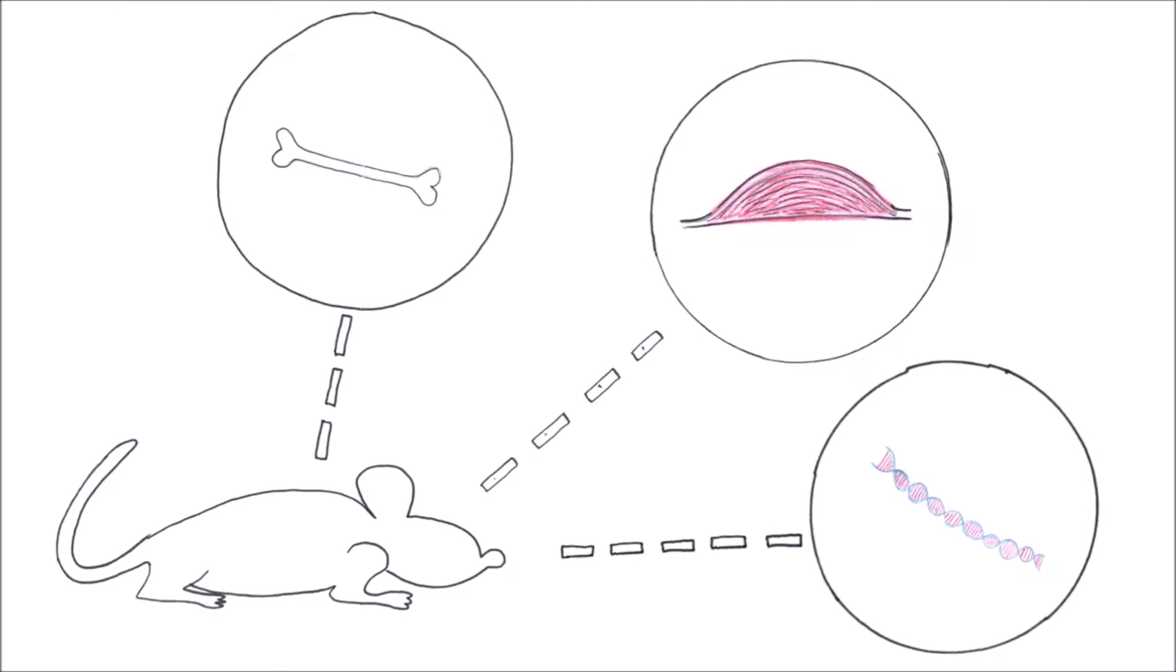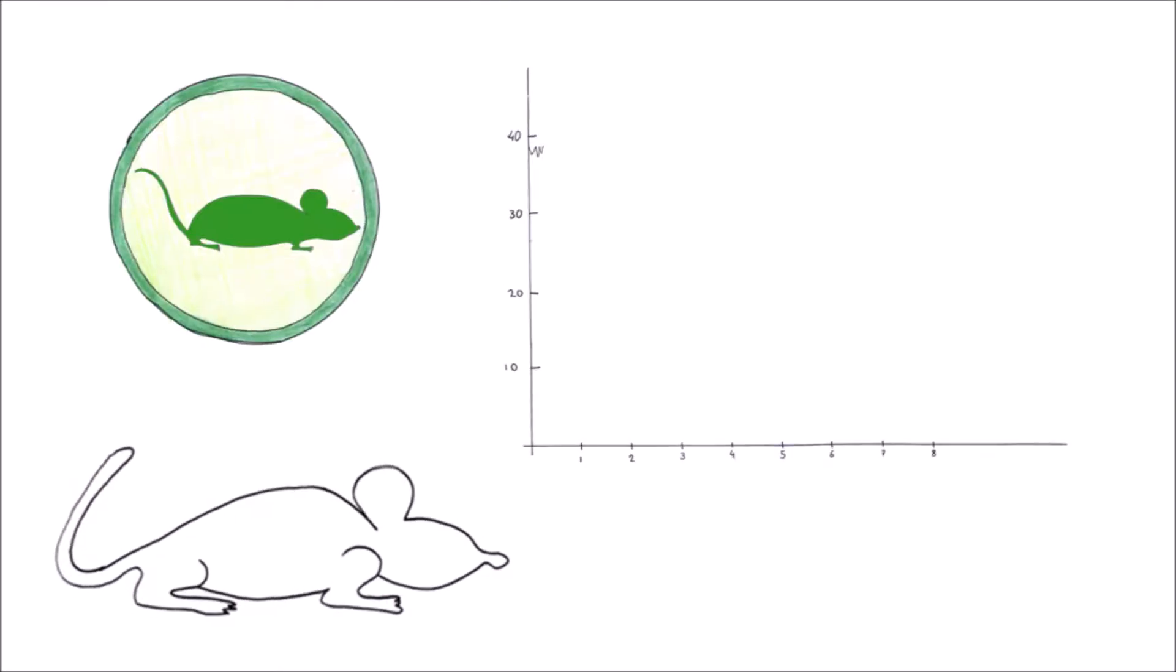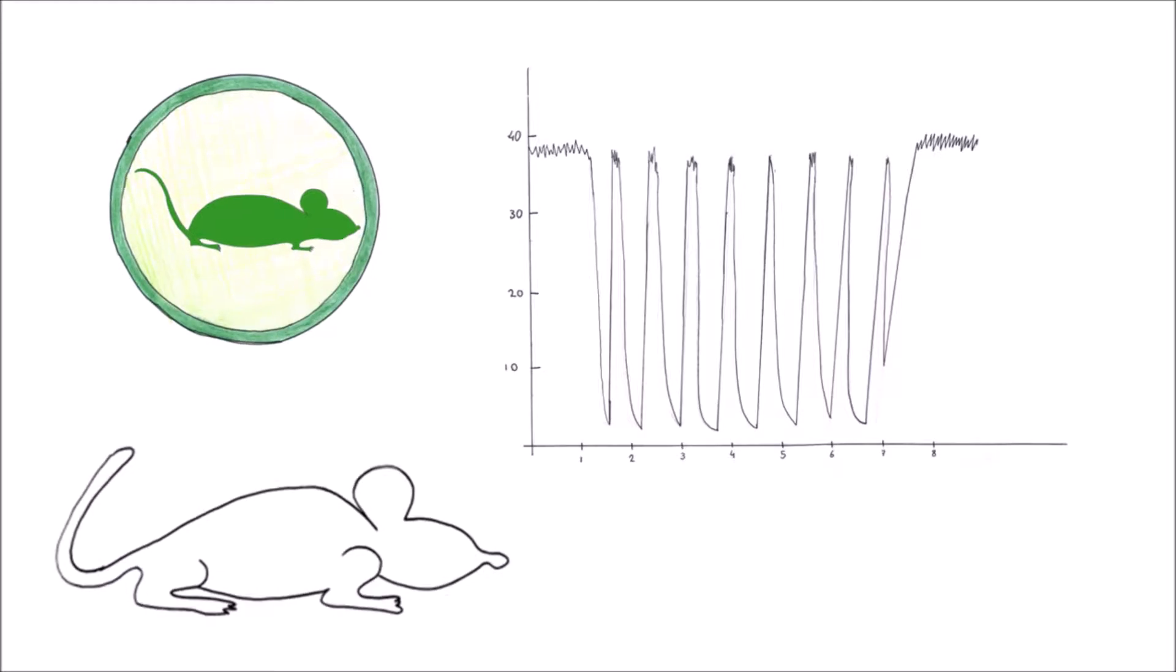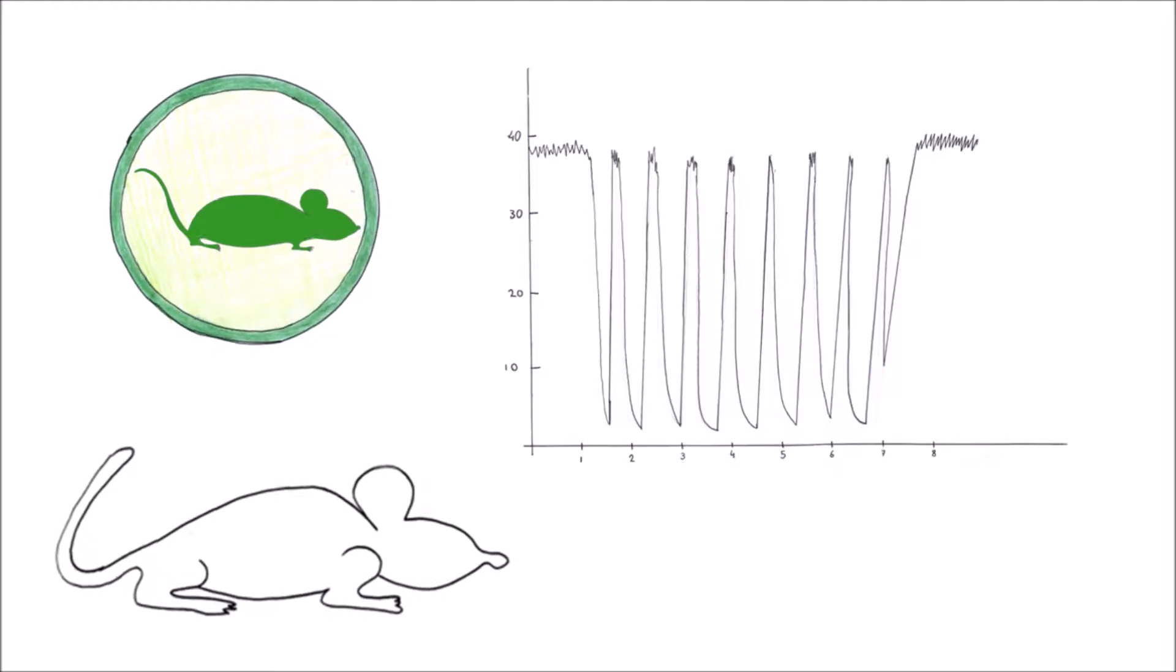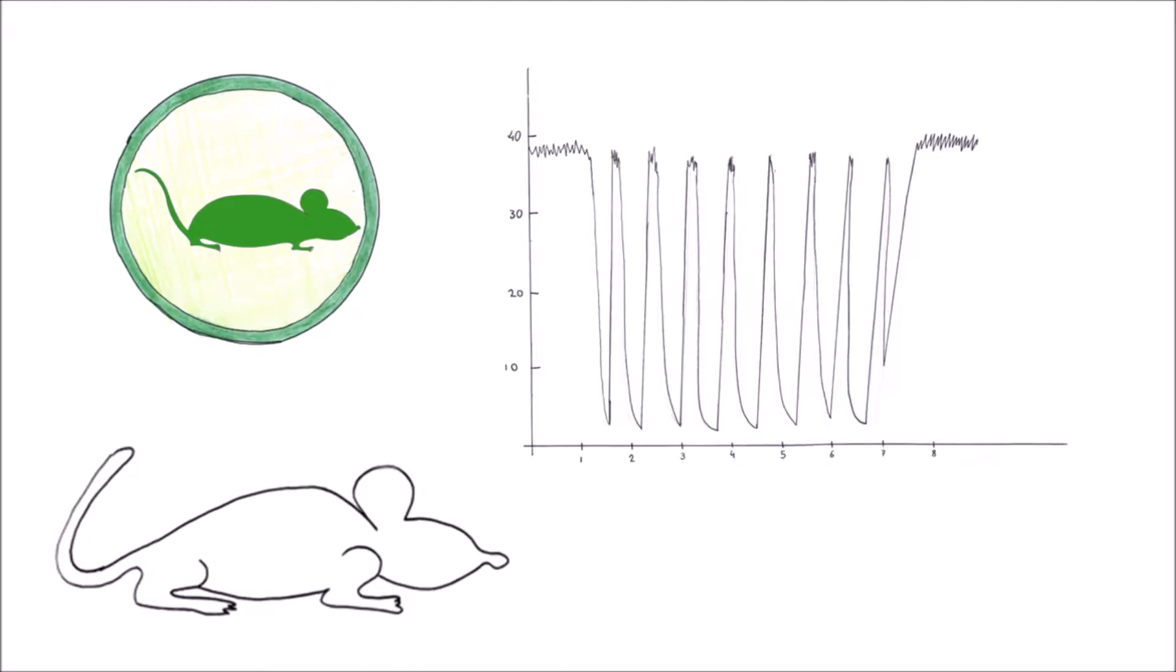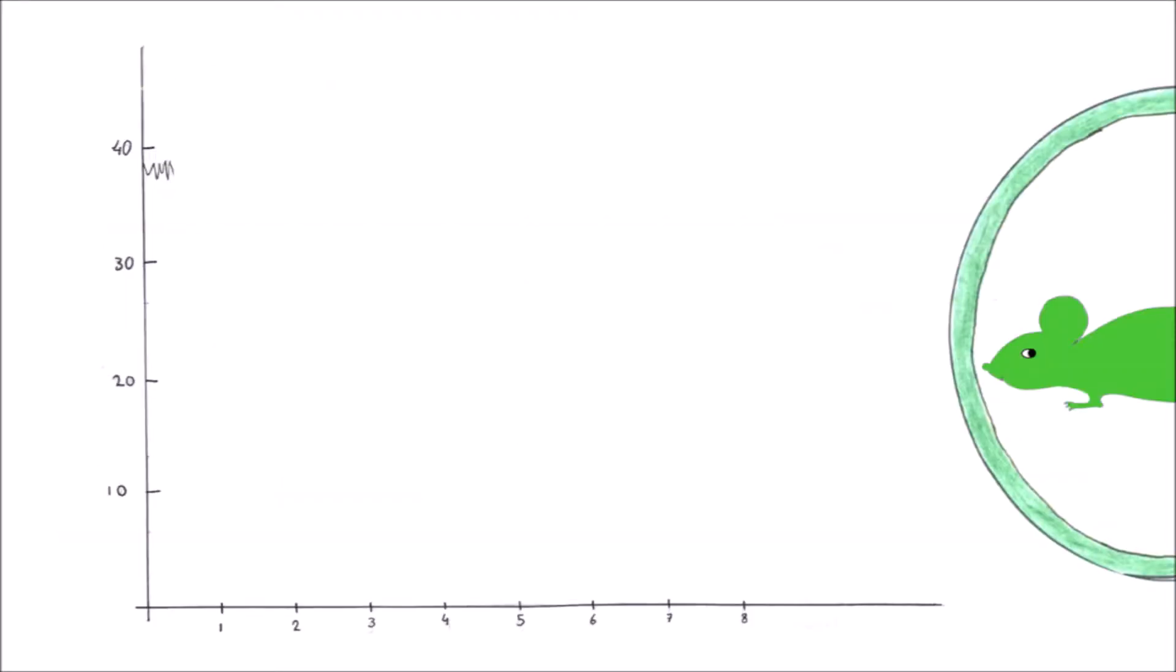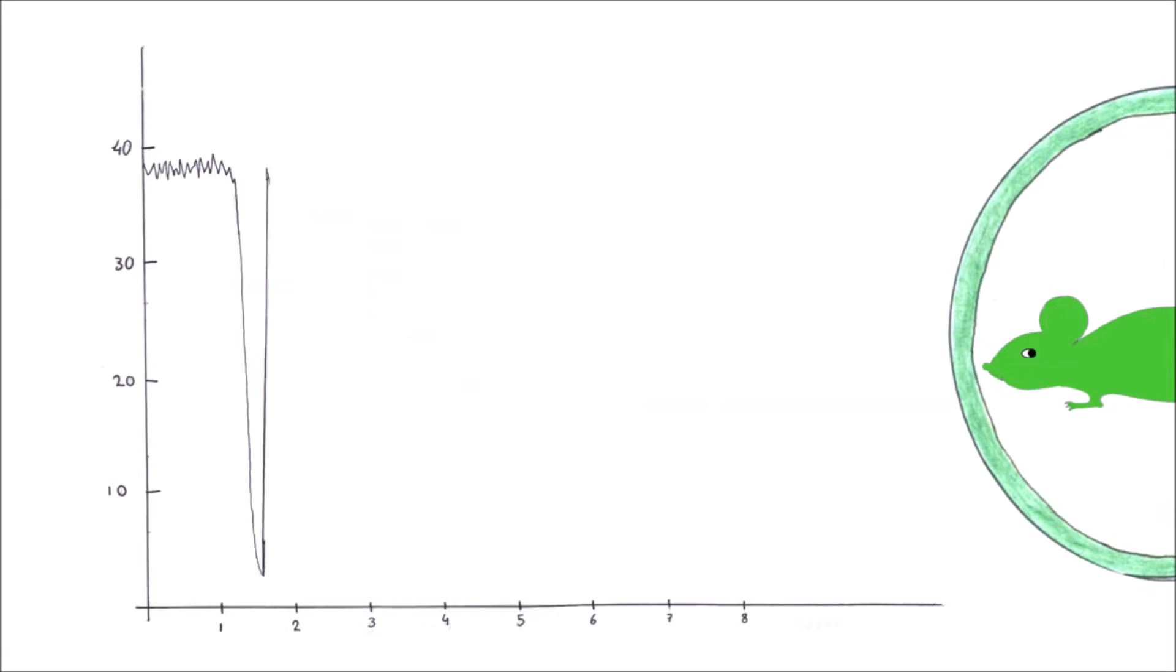These are only a few of the remarkable features of torpor. During torpor, animals have brief periods in which they increase their body temperature, called periods of arousal, after which they immediately return back to torpor. The vertical axis of this graph describes the body temperature of the animal. Notice how there are brief increases in body temperature at certain time intervals. These are the arousals.